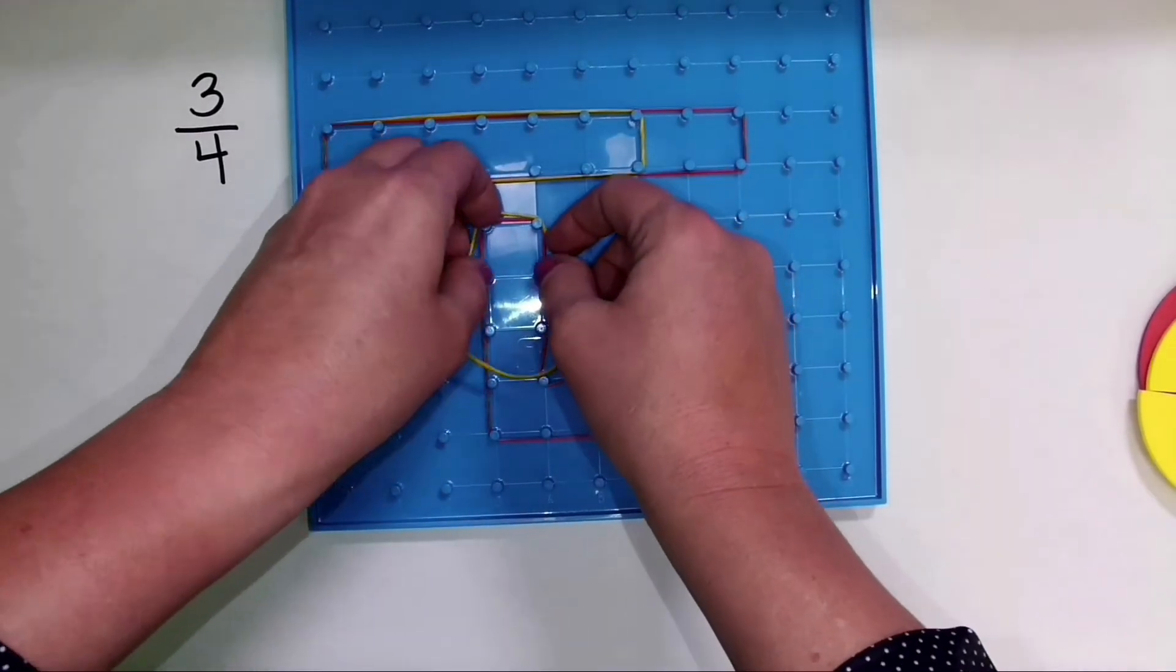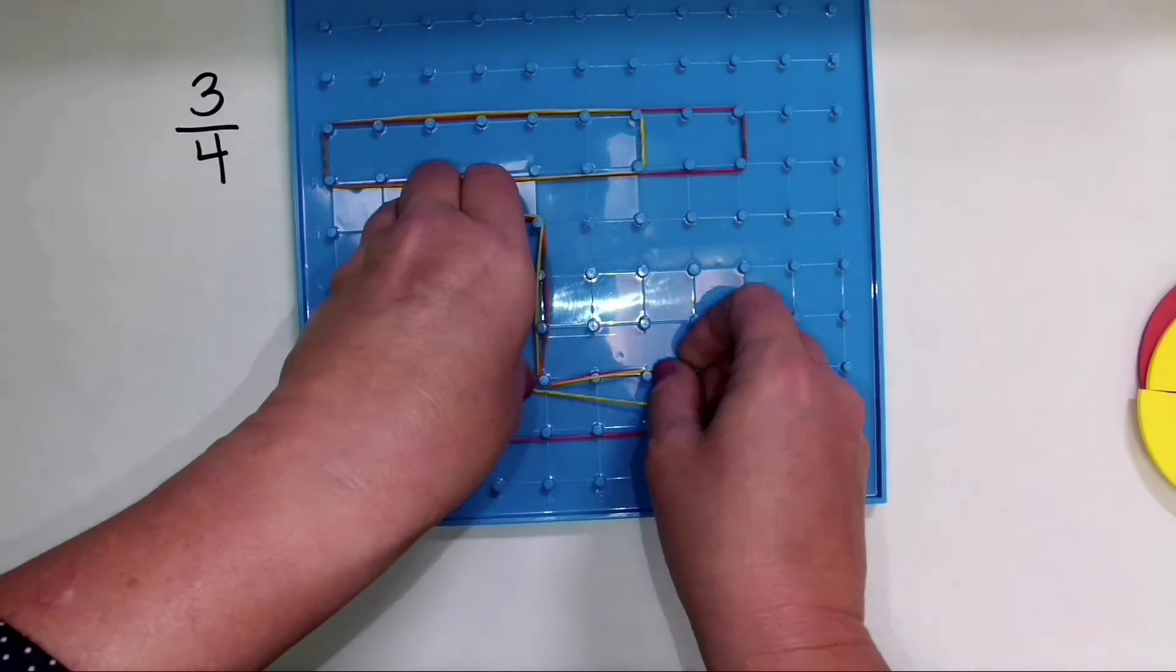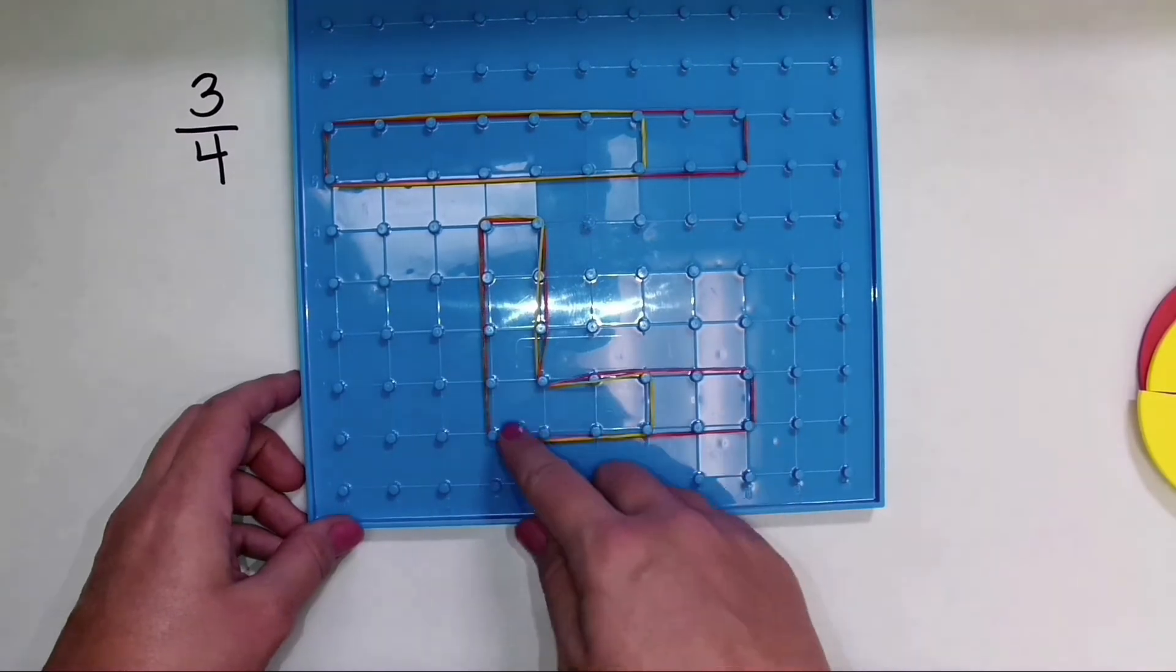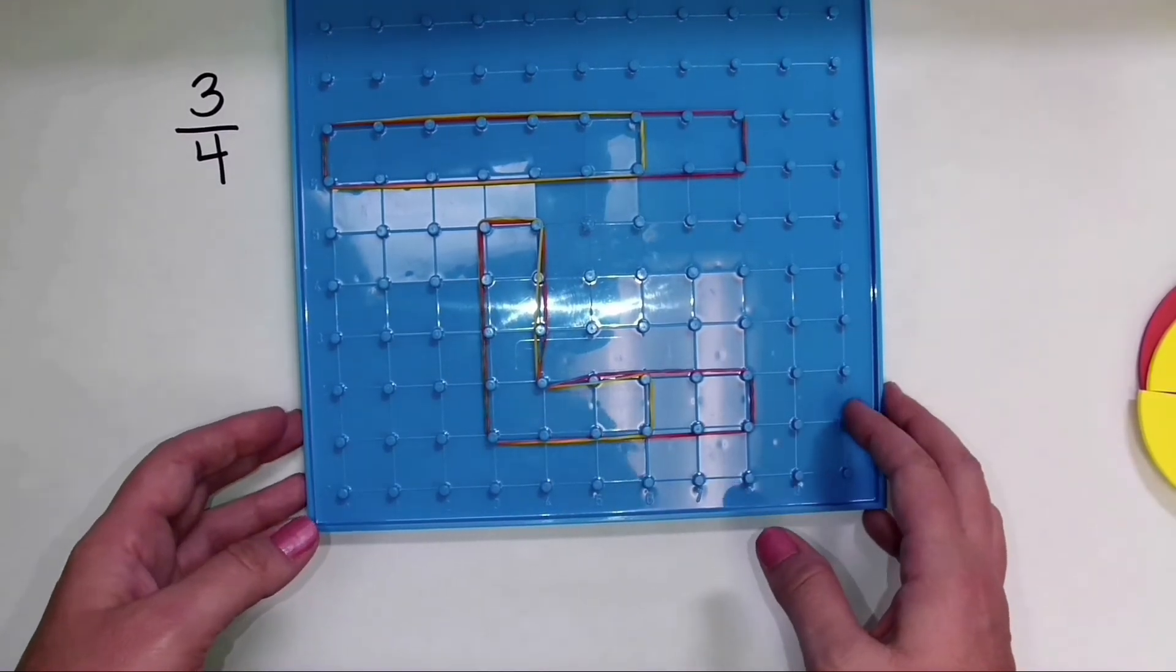And then I could take my other colored rubber band and ring the rubber band around three of those four parts. So I have an area that is divided into equal parts.